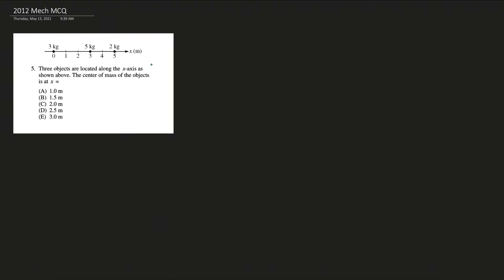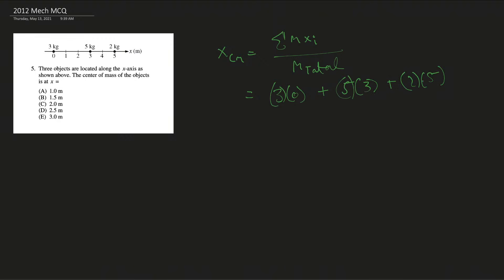Number five: three objects are located on the x-axis. The center of mass equation is the sum of each mass times its position divided by the total mass. We have: mass 3 at position 0, mass 5 at position 3, and mass 2 at position 5. So the numerator is (3×0) + (5×3) + (2×5) = 0 + 15 + 10 = 25. The denominator is 3 + 5 + 2 = 10. The center of mass is 25/10 = 2.5 meters, which is answer D.